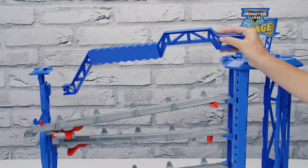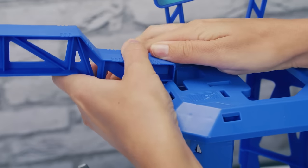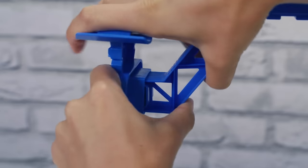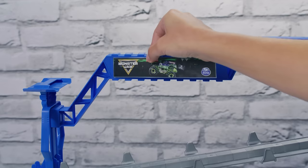Now attach the top support handle. Then attach the hand to each side support. Line up and snap into place. Add the sticker.